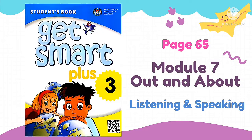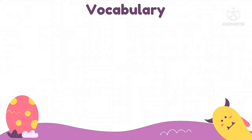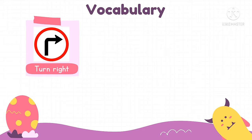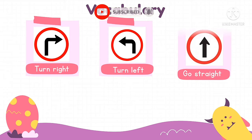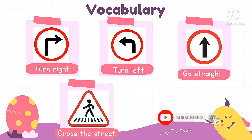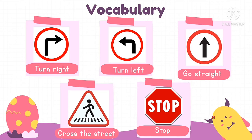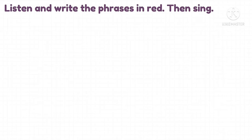Module 7: Out and About. Vocabulary: turn right, turn left, go straight, cross the street, stop. Activity one — listen and write the phrases in red, then sing. On the street.